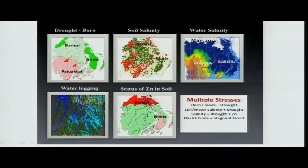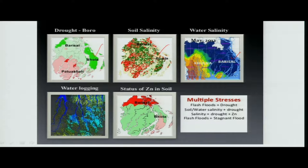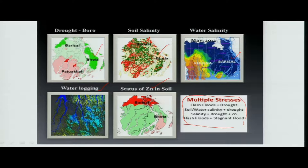There are multiple stresses which can happen: non-availability of water, which is drought; soil salinity; or water salinity. Water salinity is groundwater salinity or surface water passing through areas where salt content gets dissolved and moves up. Water logging means the water has no place to move around and drainage is poor, and there could also be some element concentration. These are the different stresses and reasons for various kinds of stress on crops.